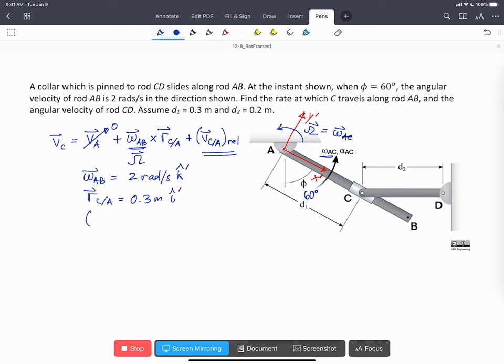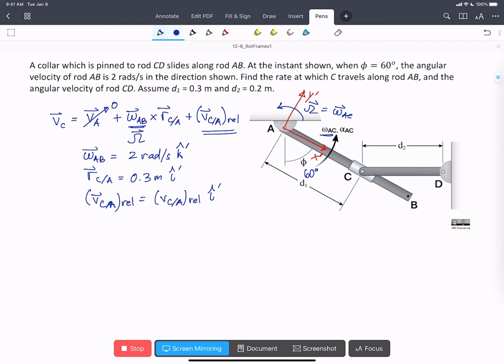oh, there's one other thing though, which is that this collar is confined to traveling along AB. So v C with respect to A relative is going to be the scalar v C with respect to A relative in the i-hat prime direction. So it can't move in j because the rod is going to constrain it. So then we can rewrite our equation for v C as we're going to have 2 times 0.3 meters per second. k-prime times i-prime is going to be j-hat prime plus our scalar v C with respect to A relative in the i-hat prime direction. And this is, of course, 0.6 meters per second.